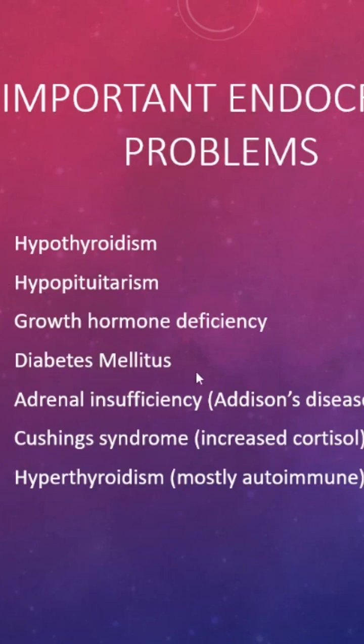Diabetes mellitus is a very important problem. We have Type 1 diabetes, which is related to a congenital abnormality in the way the pancreatic islet cells are produced, and Type 2 diabetes, which is more of insulin resistance, where the tissues do not respond to insulin as well. In terms of adrenal, we have adrenal insufficiency.